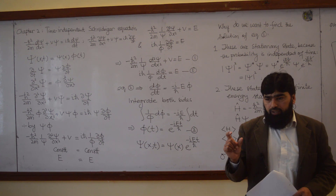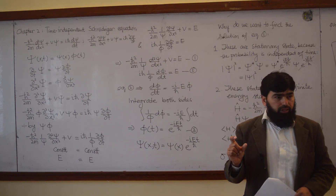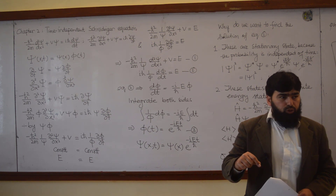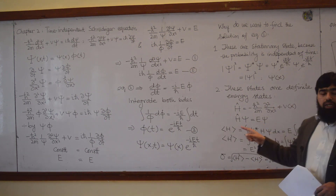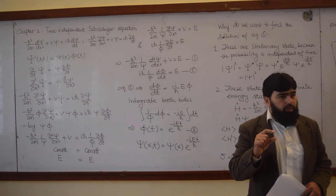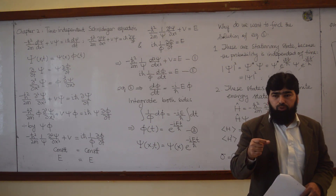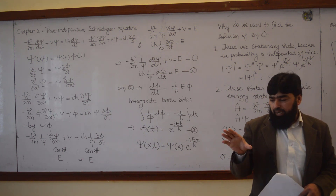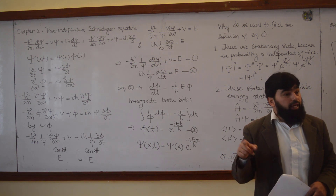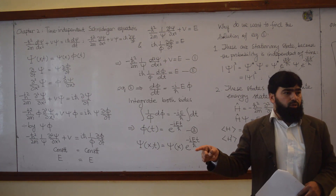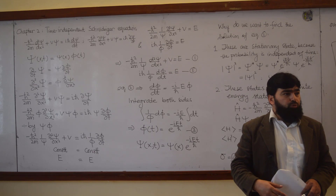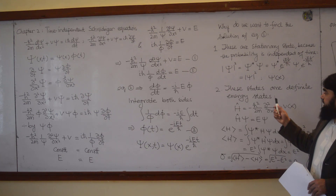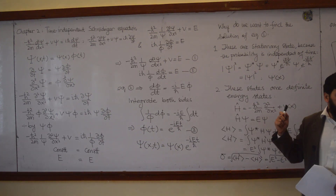If you have 100 identical samples and measure the energy of each, say it is a hydrogen atom in its ground state, every measurement gives you −13.6 eV. The second, third, fourth measurement on an identical system will always give the same value: −13.6 eV. We say these are definite energy states.